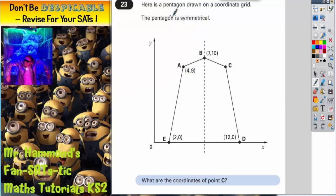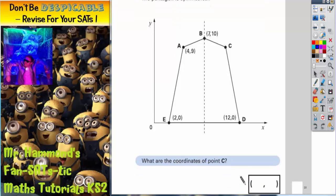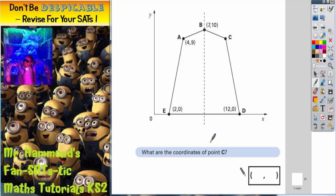Question 23. Here is a pentagon drawn on a coordinate grid. The pentagon is symmetrical. And what we've got to do is work out the coordinates of point C.